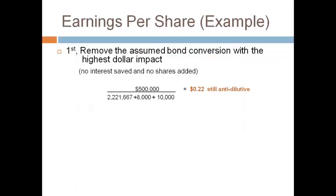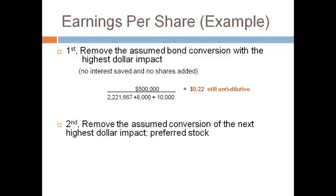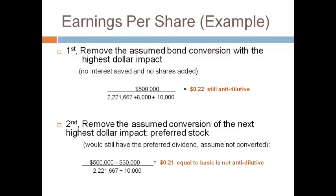After removing the pretend bond conversion, diluted EPS is still higher than basic EPS of $0.21. Remove the impact from the next highest convertible — the preferred stock — and assume the preferred stock is not converted and the dividend is still paid. Now diluted EPS only has the impact of pretending to exercise the warrants. Diluted earnings per share is equal to basic earnings per share and is not dilutive. The company will report both basic and diluted EPS at $0.21 per share.